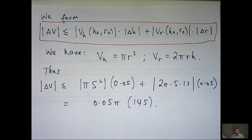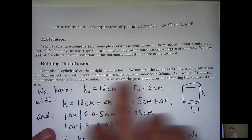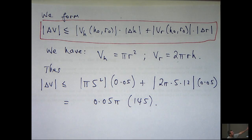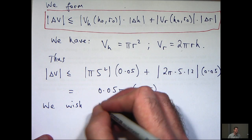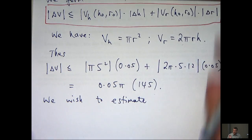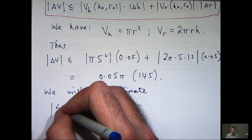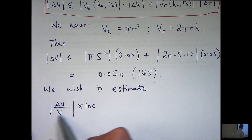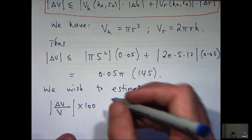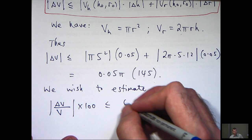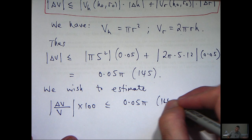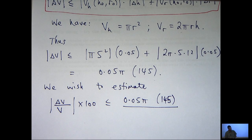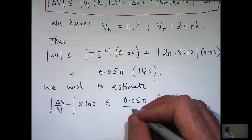But let's go back to our question and look at what we're looking for. We'll obtain an estimate on the percentage error in calculating the volume of the can. So what we would want is to estimate the following: it's going to be ΔV all over V times 100. Now, this V is evaluated at (h₀, r₀). So we know from up here, this is less than or equal to 0.05π times 145.